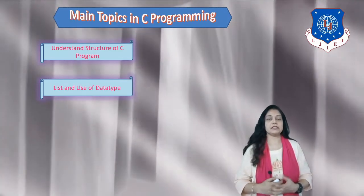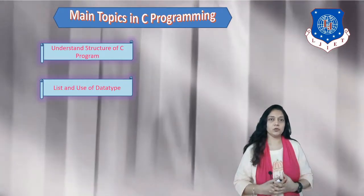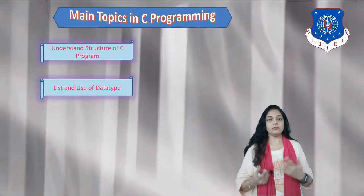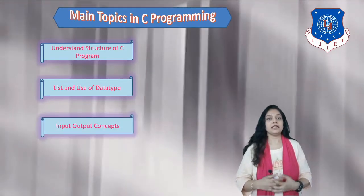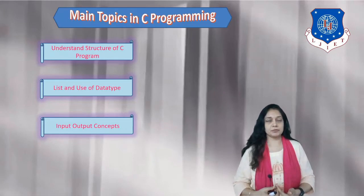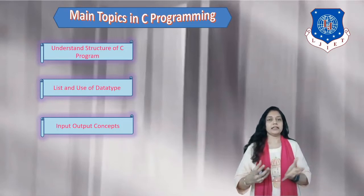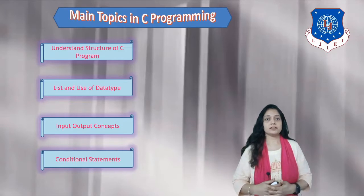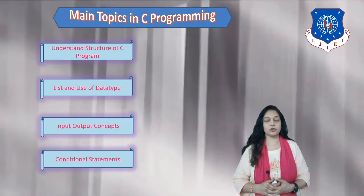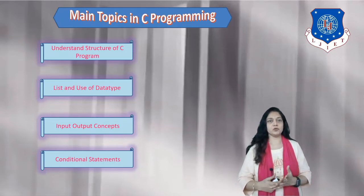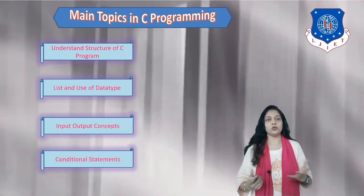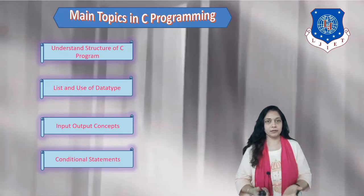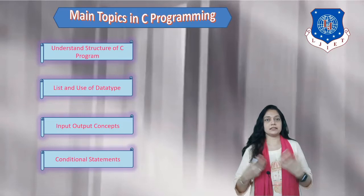Next is data types — we will see what different data types are available in C, which are used to store data such as integers, float decimal point values, characters, or strings. Then we have input-output concepts, used when you want to take data from the keyboard or display it on the monitor. After that, condition statements — used to test conditions where the output is either true or false, such as testing whether a number is greater than 100, whether a number is prime, or whether a character is a vowel.